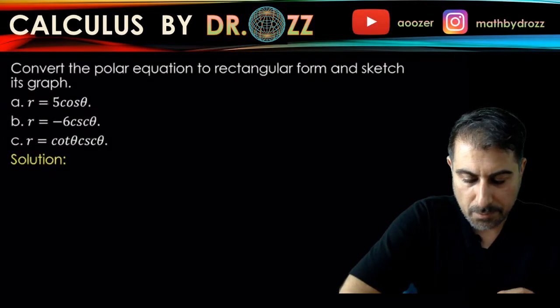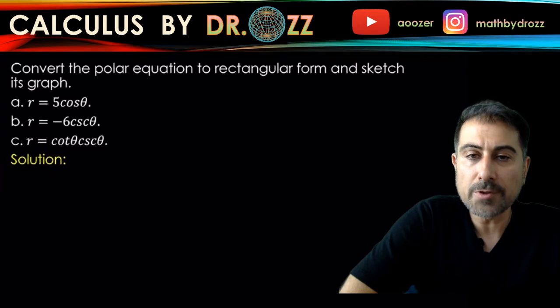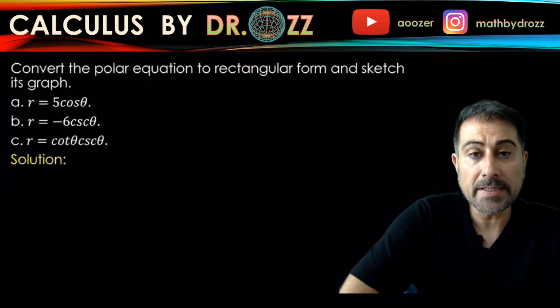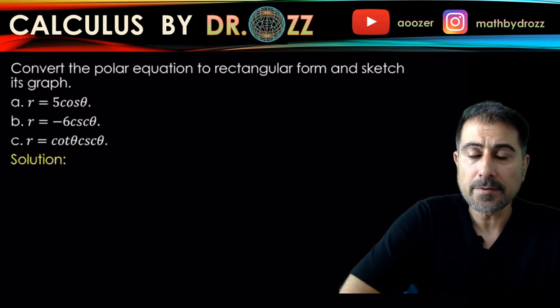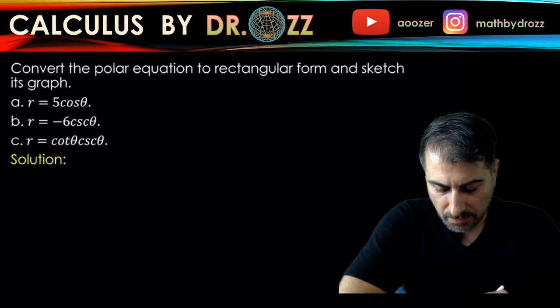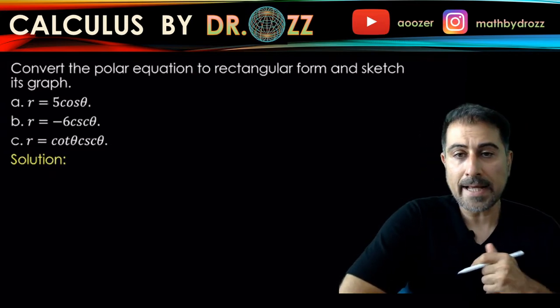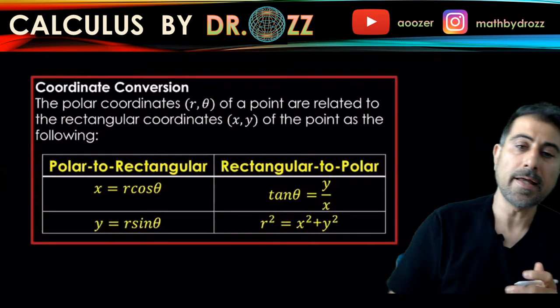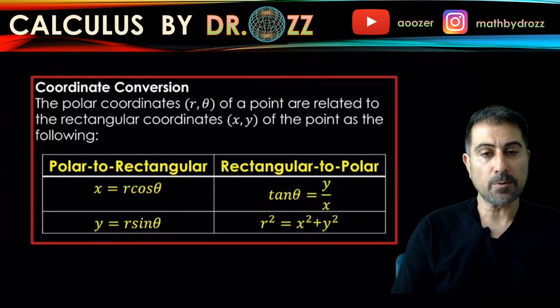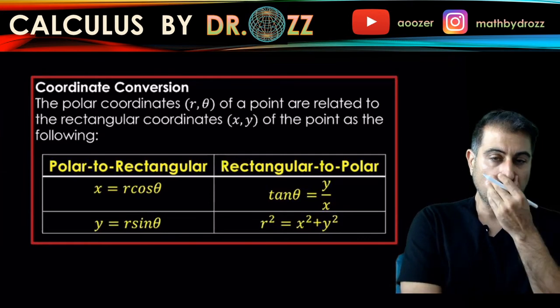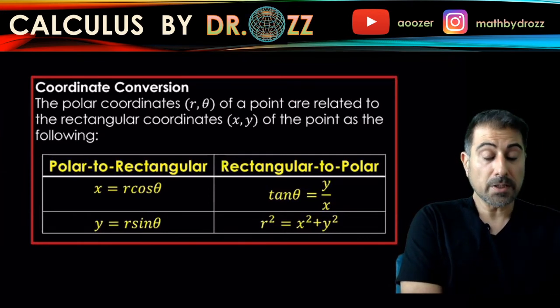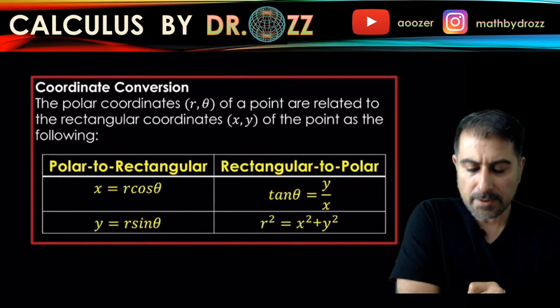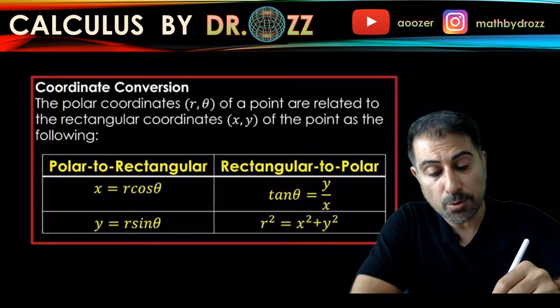All right, let's take care of part A. We are given r equals five cosine theta. And that's the equation written in the polar form. And we want to go back to the rectangular form. And eventually, we're going to sketch its graph. So let's start with bringing up this table here that x and y are defined by r cosine theta and r sine theta. And if you have y over x, y over x is in fact tangent theta. Here r squared equals x squared plus y squared. So we're going to make use of these conversions and try to get back to the rectangular formulation here.